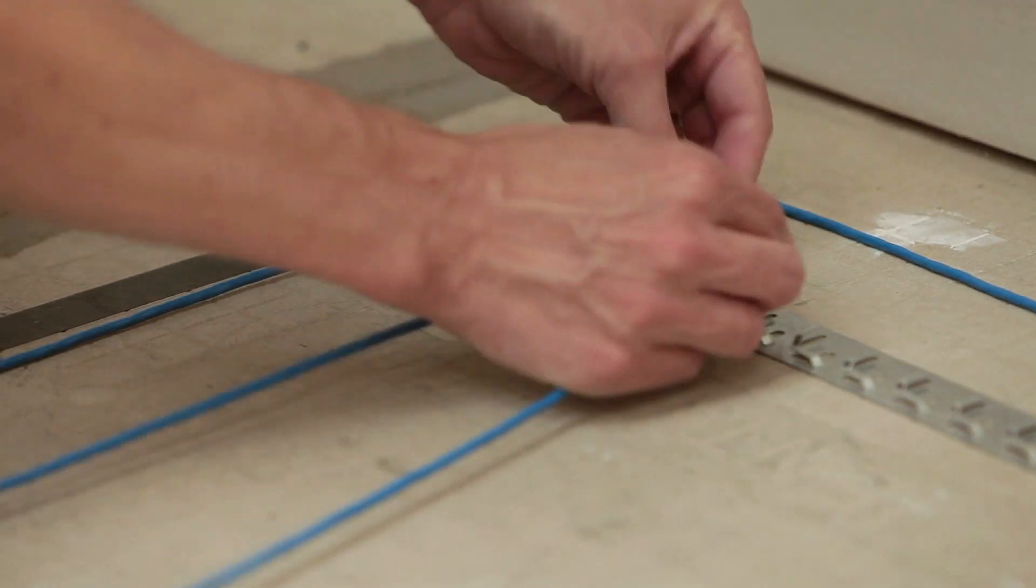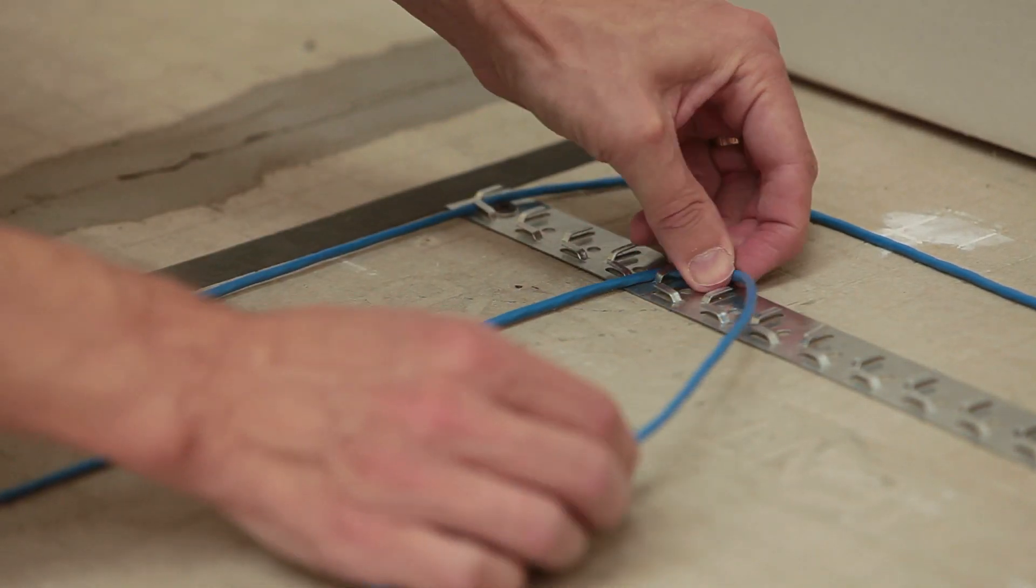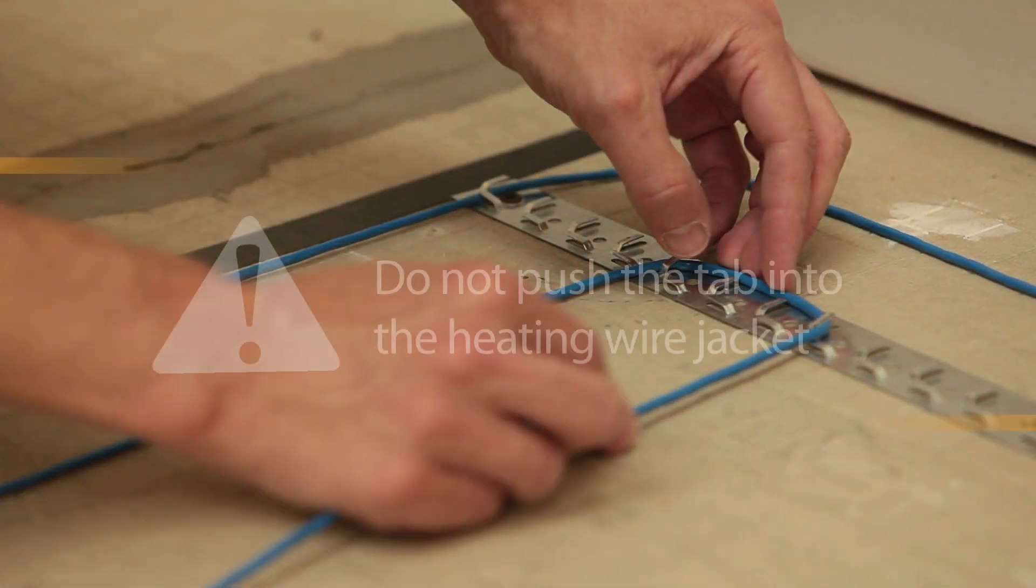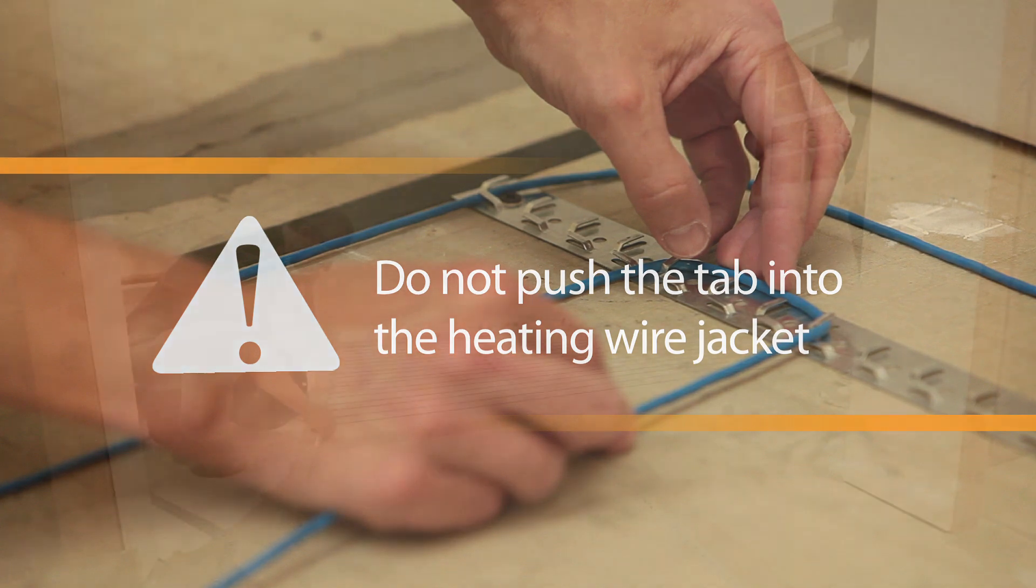Place the wire under the first tab. Bend each tab to secure the heating wire in place by hand. Do not use a hammer. Be careful not to push the tab into the heating wire jacket. Doing so may damage the wire.